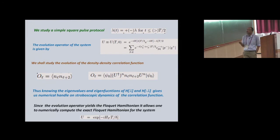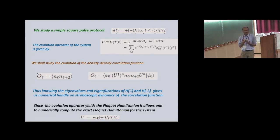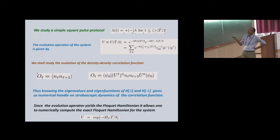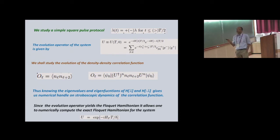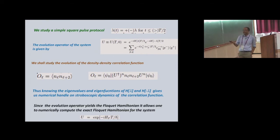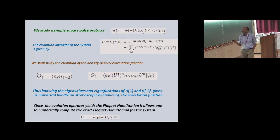Now I'm going to talk about periodically driving this model. We study a simple square pulse protocol, the simplest to analyze, where we make lambda a function of time: in the first half of each period lambda(t) = −lambda and in the second half lambda(t) = +lambda. The unitary evolution operator can be written accordingly. Using exact diagonalization to get the energy eigenstates and eigenvalues for H(+lambda) and H(−lambda), denoted ε+ and ε−, one can calculate the expectation value of any operator. We are interested in the density-density correlator ⟨n_l n_{l+2}⟩, which is translation invariant, and from knowing U we also numerically know the Floquet Hamiltonian.